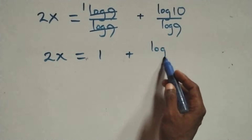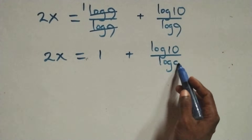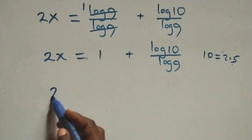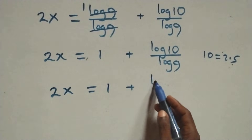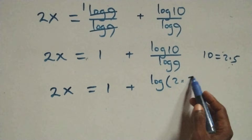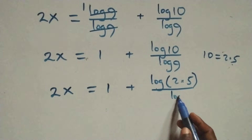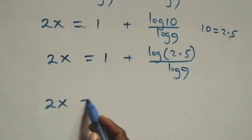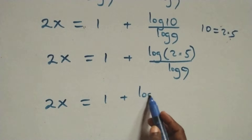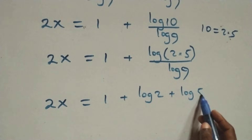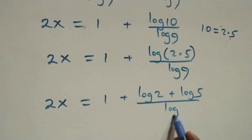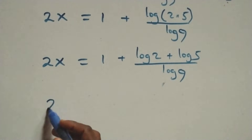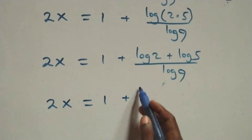We can write 10 as 2 times 5, so this becomes 2x equals 1 plus log of 2 times 5, over log 9. Applying the logarithm product rule again, we have 2x equals 1 plus log 2 plus log 5, all over log 9.